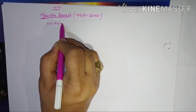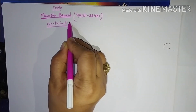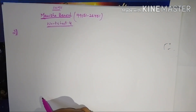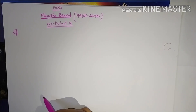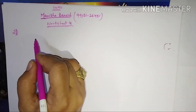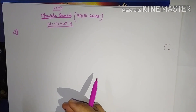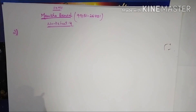Today I am taking sum number 2 from worksheet 4. The sum is: find the least number which must be subtracted from 6203 to obtain a perfect square. Now, there will be four types of sums — what must be subtracted, added, multiplied, and divided. Students are getting confused in these sums.